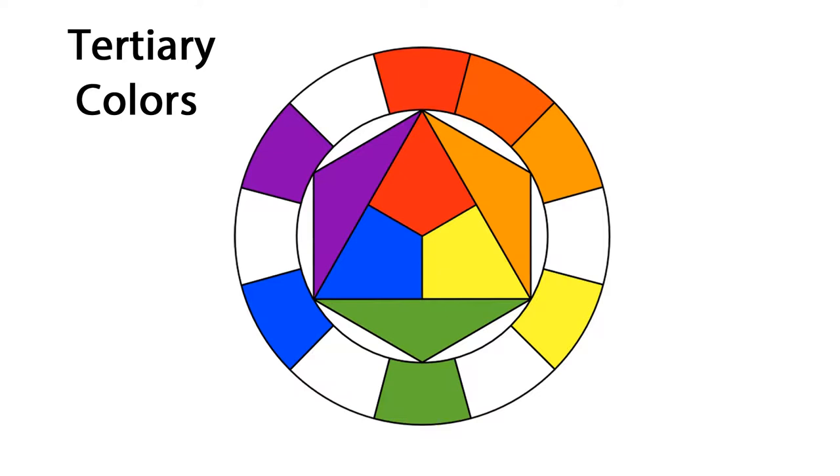Tertiary colors are secondary colors that have more of one of the primary colors, like red-orange, yellow-orange, yellow-green, blue-green, blue-violet, or red-violet.